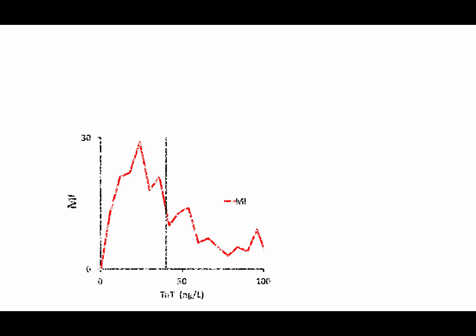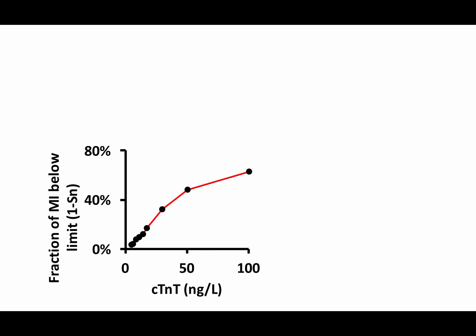This can be made into a plot. As you can see, the fraction of patients that have myocardial infarction and present below a given Troponin T-level increases almost linearly up to 30 to 50 nanograms per liter, and then levels out.